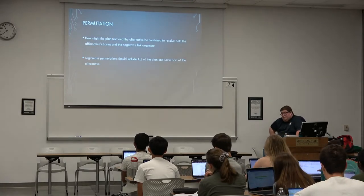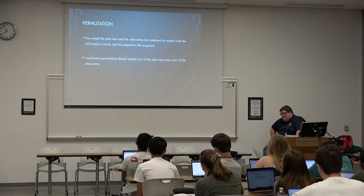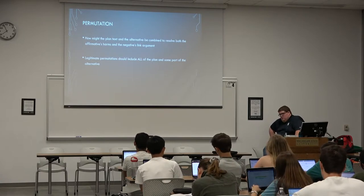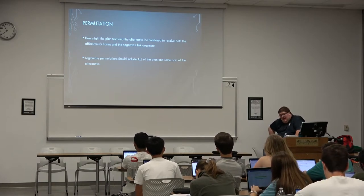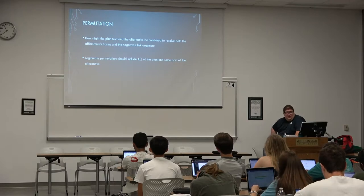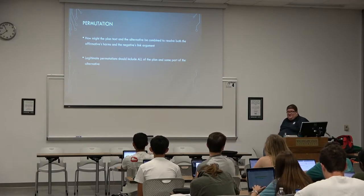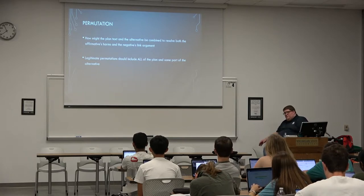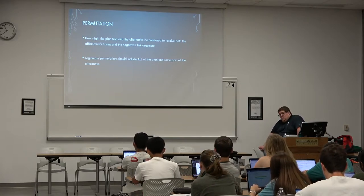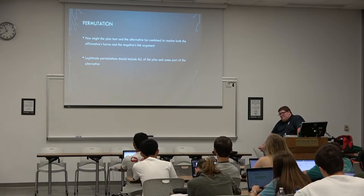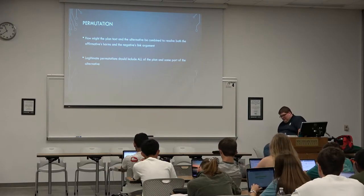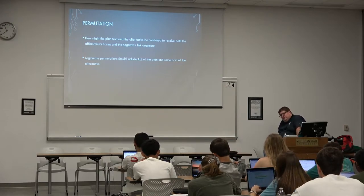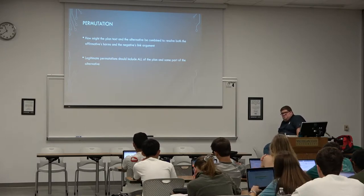Permutation. Hopefully when talking about counterplans you talked a little about what a permutation is. A permutation is a way to combine the plan text and the alternative in a way that might resolve both the harms of the affirmative and the negative's link arguments and implications. For example, how might that apply to the security criticism? Let's say the affirmative is to end arms sales to Taiwan.